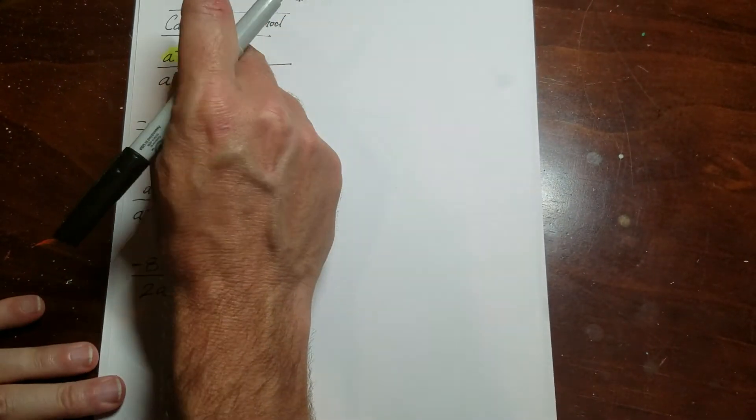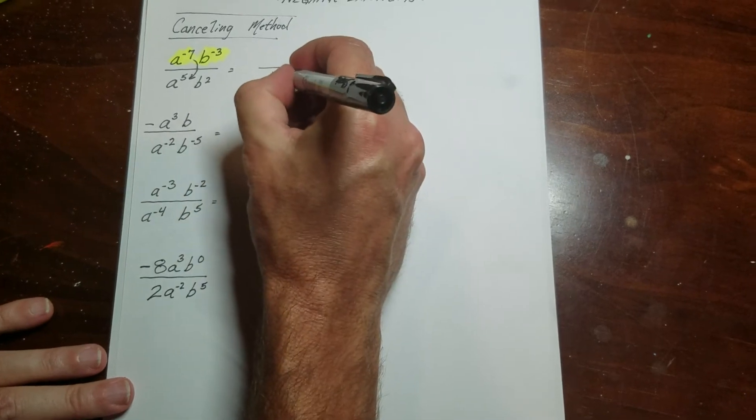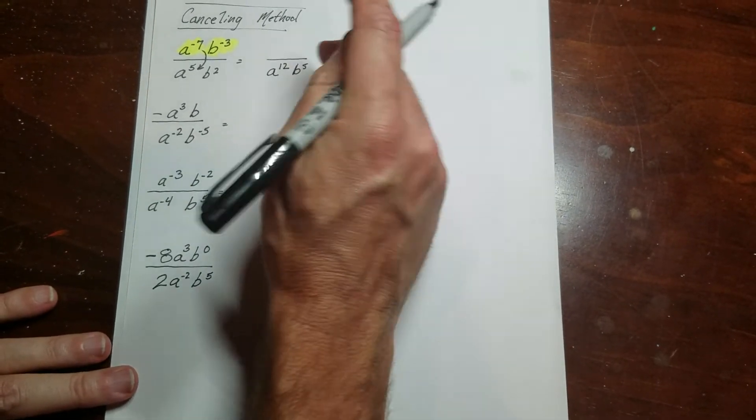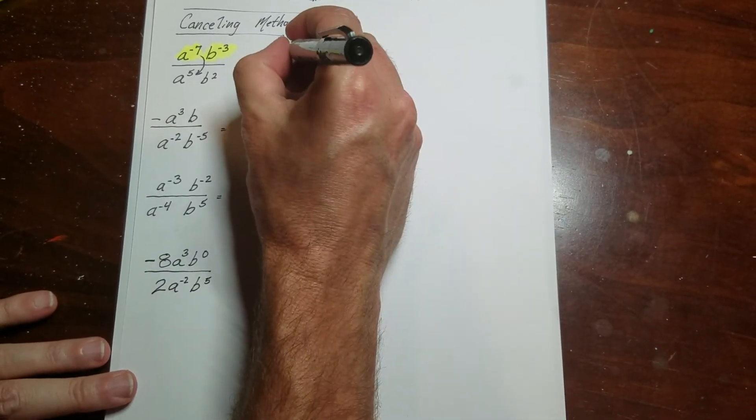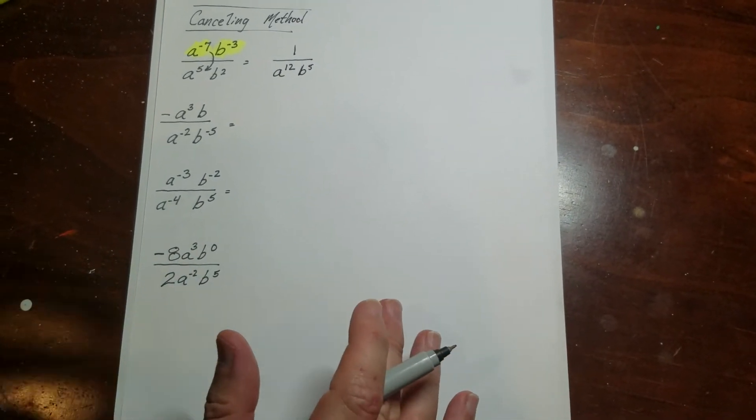So now it would be actually 7 plus 5, and this b over here would actually come down here as a positive 3. So now there would be 5 down here. And since there's nothing left up here, you always put a 1. So actually, for this particular problem, that would be it. That's all you'd have to do.